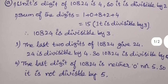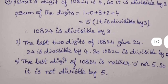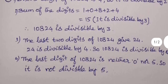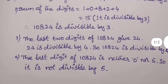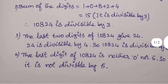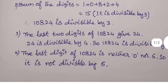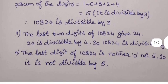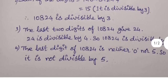So here the units place of the given number is 4, so that's why it is divisible by 2. Next, divisibility by 3: a number is divisible by 3 if the sum of the digits is divisible by 3. Here the sum of the digits of the number 10824 is 1 + 0 + 8 + 2 + 4, that is 15. So it is divisible by 3, so the entire number 10824 is also divisible by 3.